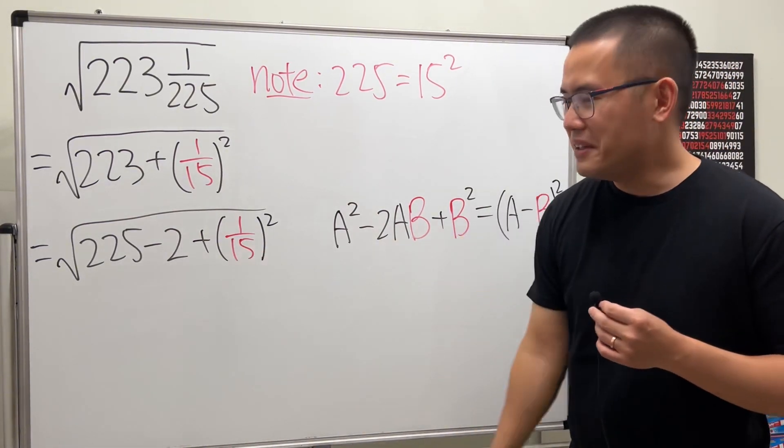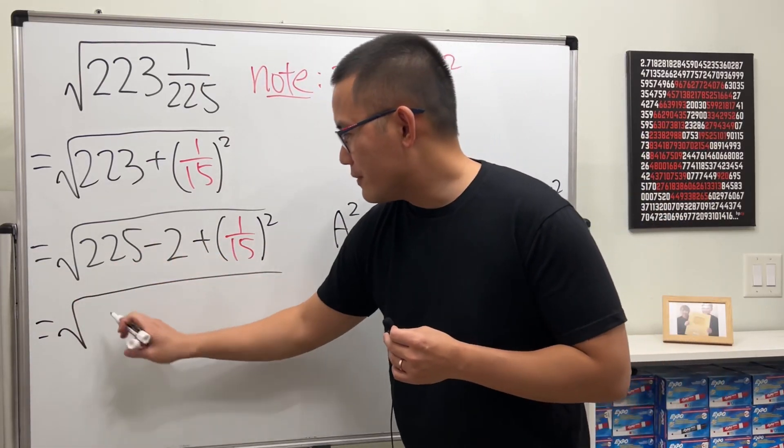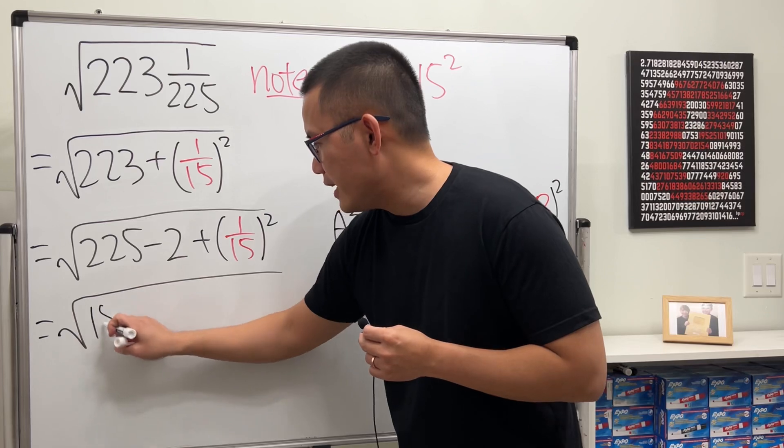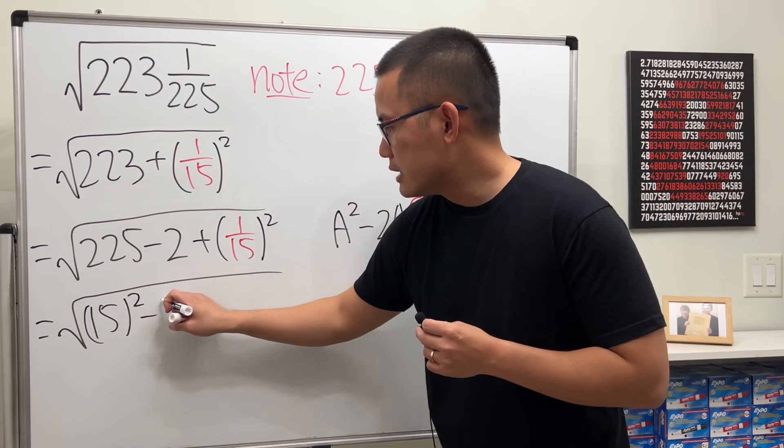And that's exactly what will happen right here. So, we see that, let's write it. 215... 225 is 15 squared. And then, for this middle part, it's minus 2, right?